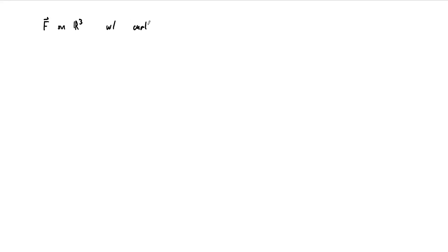Suppose F is a vector field on all of R³ for which the curl of F is identically the zero vector on all of R³. What we'd like to show now is that this vector field must be conservative on all of R³.